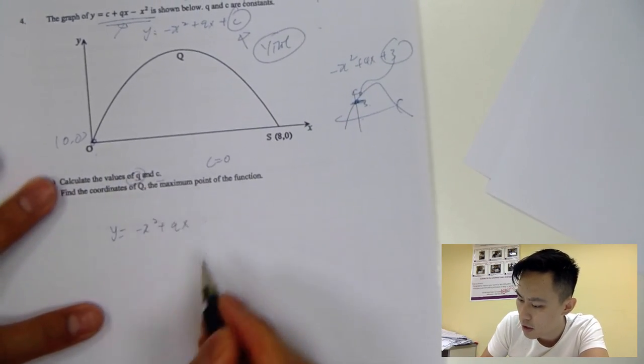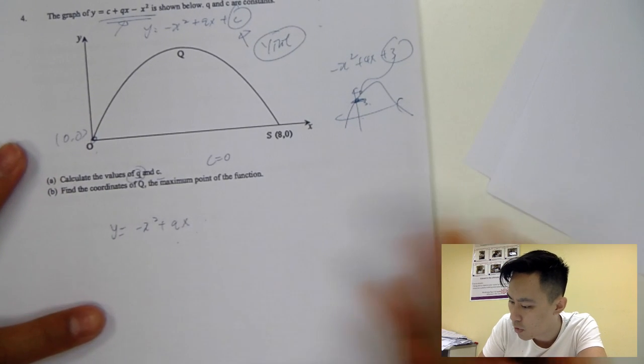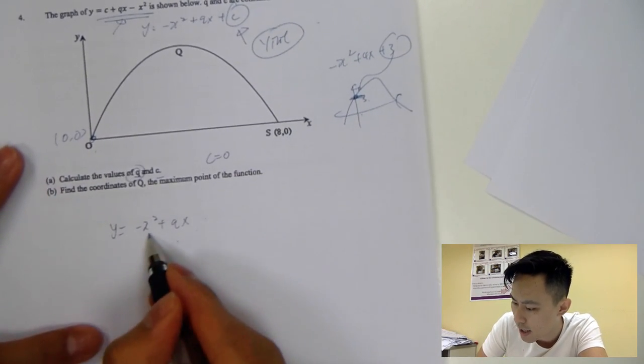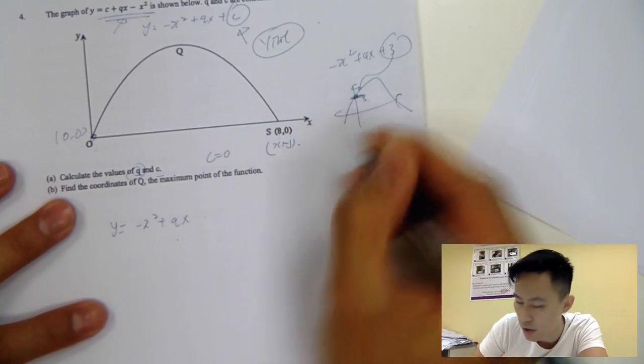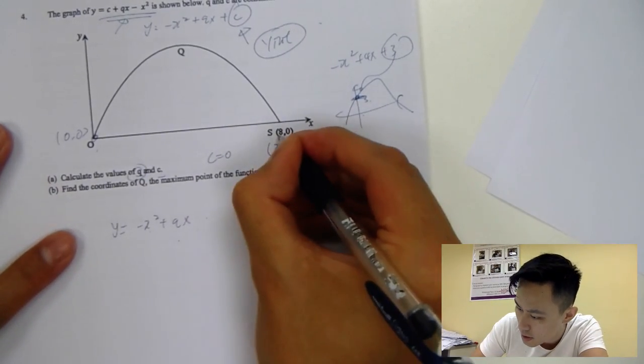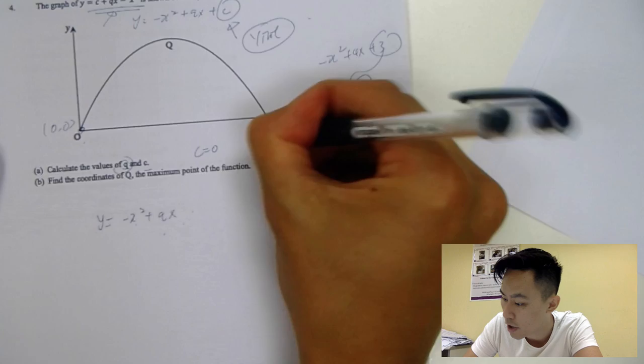And then how do you find q then? For q, we can sub in any point. We can sub in 8, 0. So this is x, this is y. Make sure you understand the coordinate systems. This is x and y. Don't mix up the arrangement.